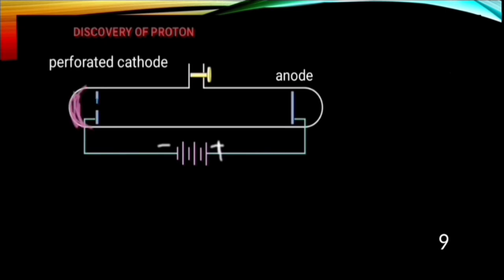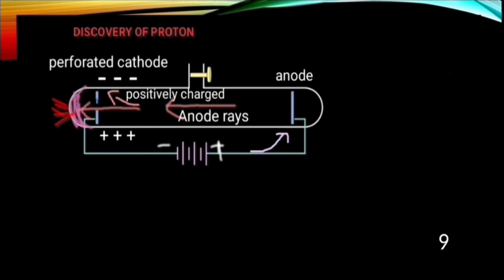When a high voltage was applied across the electrodes in the discharge tube, a faint red glow was observed behind the perforated cathode. Glow was due to another set of rays flowing opposite to that of the cathode rays. When additional electric field was introduced, it was observed that the rays deflected towards the negative plate. From this, it was concluded that the rays itself is positively charged and because it was emerging from anode, so it was named as anode rays.